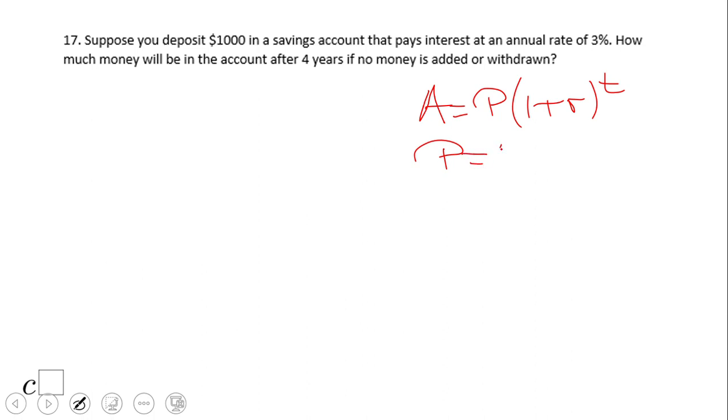The first one is right here and it's related to money, so I'm going to use the second formula. P in this case is the money you deposit, one thousand dollars. The rate is three percent, which is 0.03, and t is four, four years. So we're gonna have A of four.